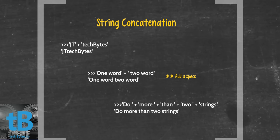Now, if you wanted to add a space, you would have one such as the second example here, one word and two word. You'll notice that right before the word two, there is a space, which allows us to have one word two word come down below.